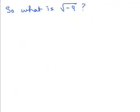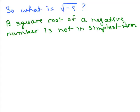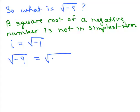Now, what is square root of negative 9? Can we simplify that? We never leave a negative under the square root sign — a square root of a negative number is not in simplest form. So we go back to our definition: i equals the square root of negative 1. We're going to use the idea that square root of negative 1 is just i. So, the square root of negative 9 is the square root of 9 times negative 1, which is the square root of 9 times the square root of negative 1, or 3i.